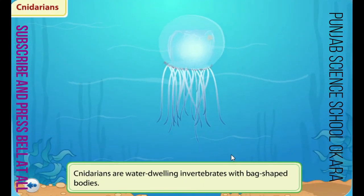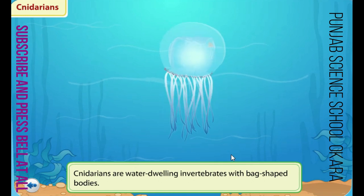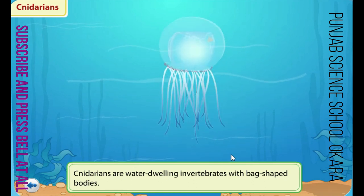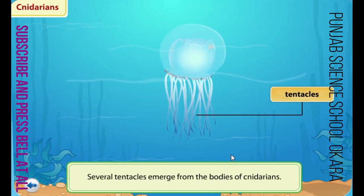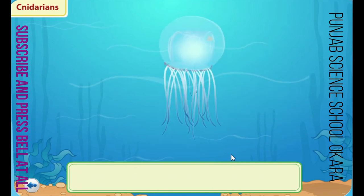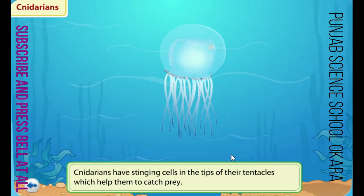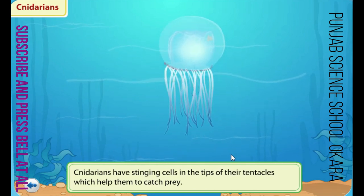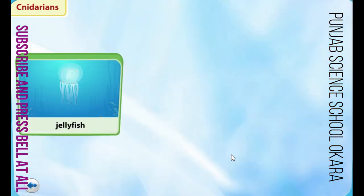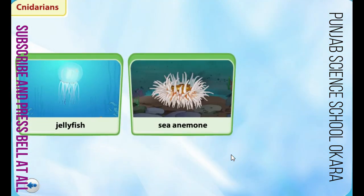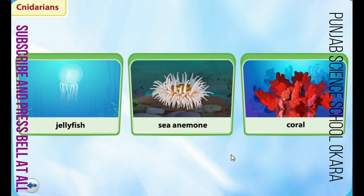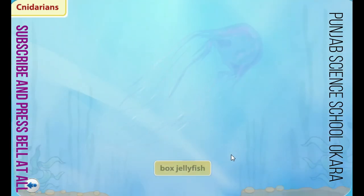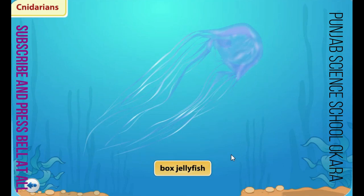Cnidarians are water-dwelling invertebrates. The bodies of cnidarians are shaped like a bag, and several tentacles emerge from their bodies. Cnidarians have stinging cells in the tips of their tentacles which help them catch prey. Jellyfish, sea anemones, and corals are examples of cnidarians. The box jellyfish is the most deadly jellyfish — each of its tentacles has about half a million extremely poisonous stinging cells.